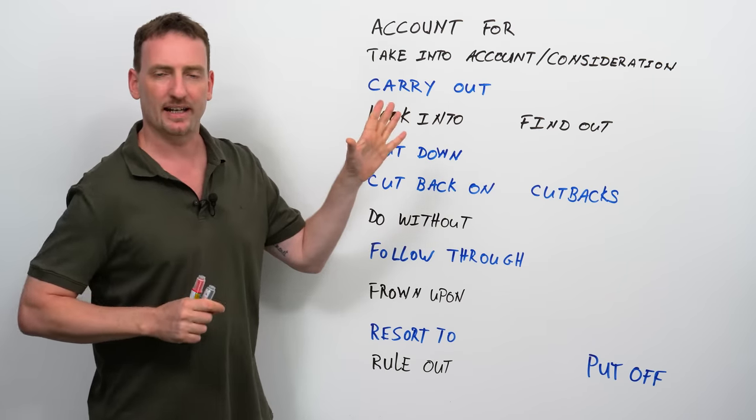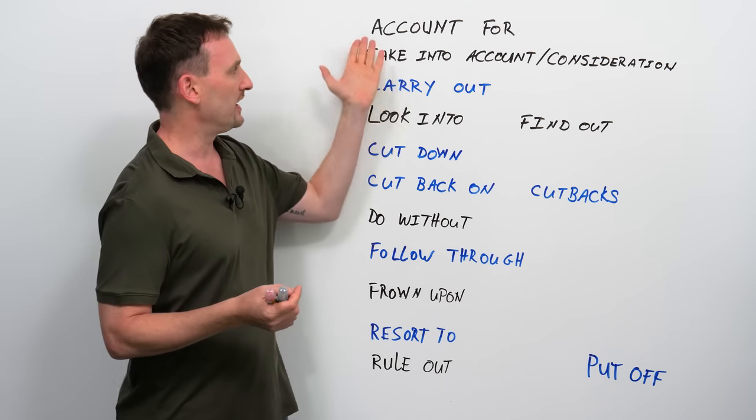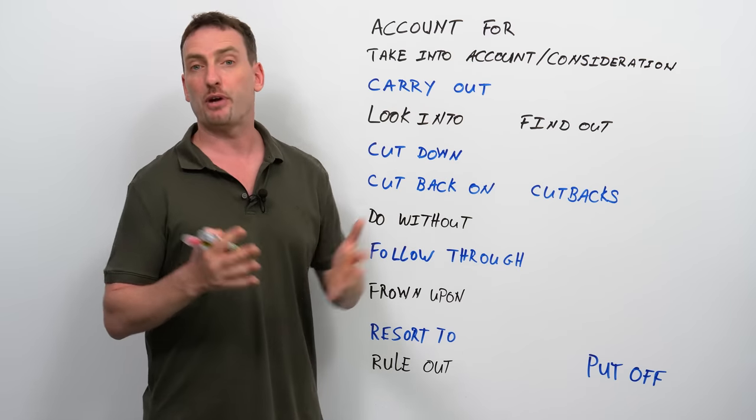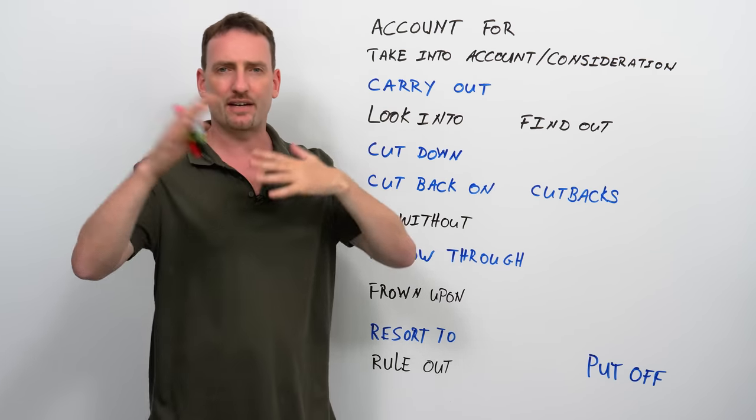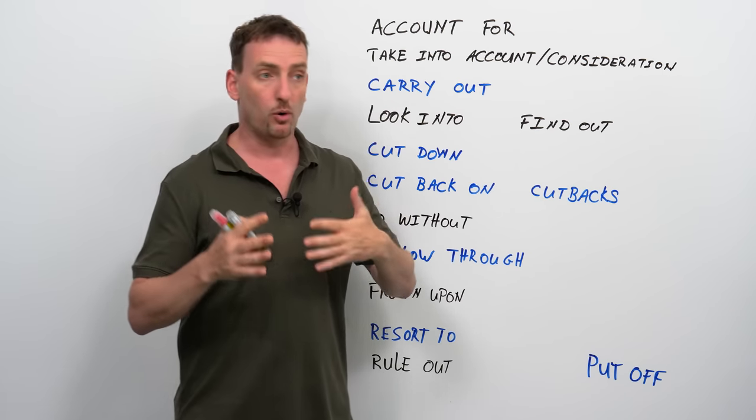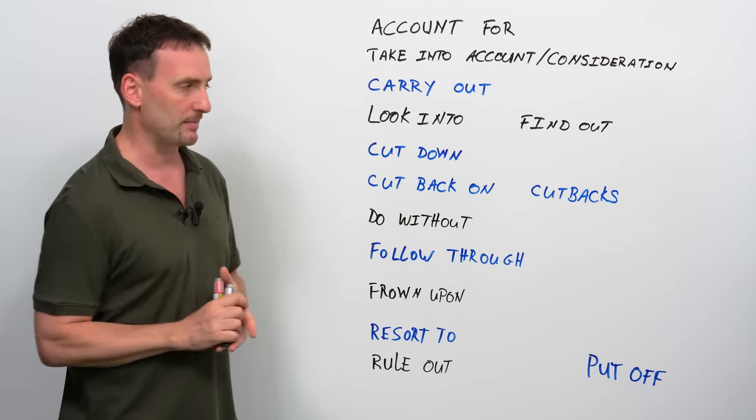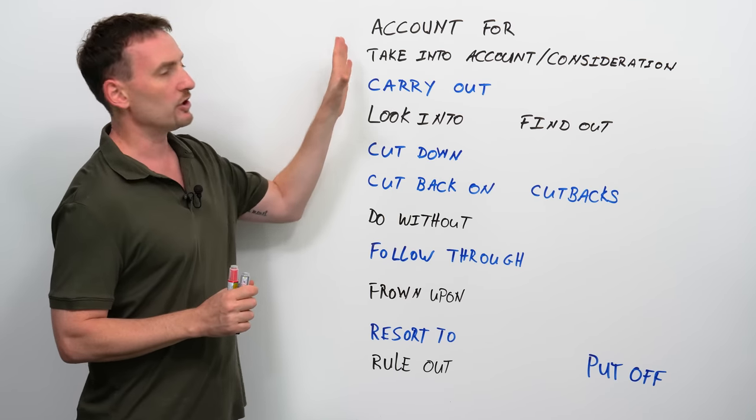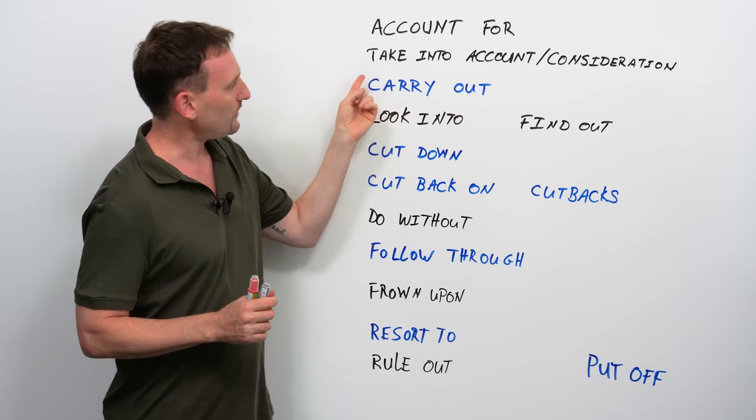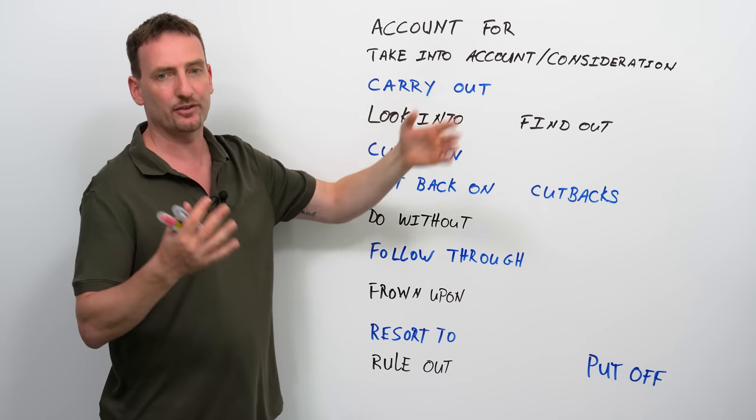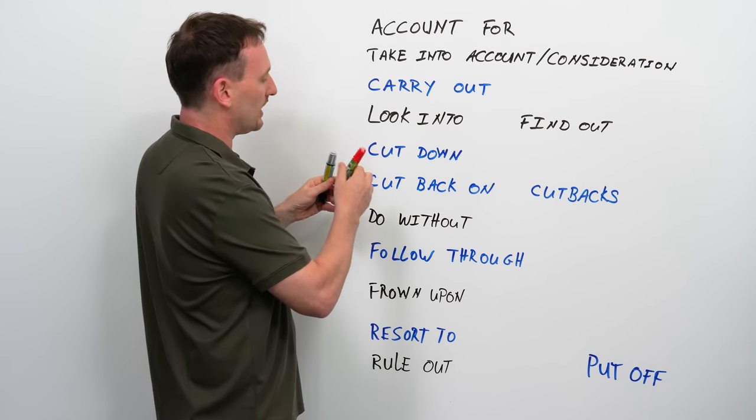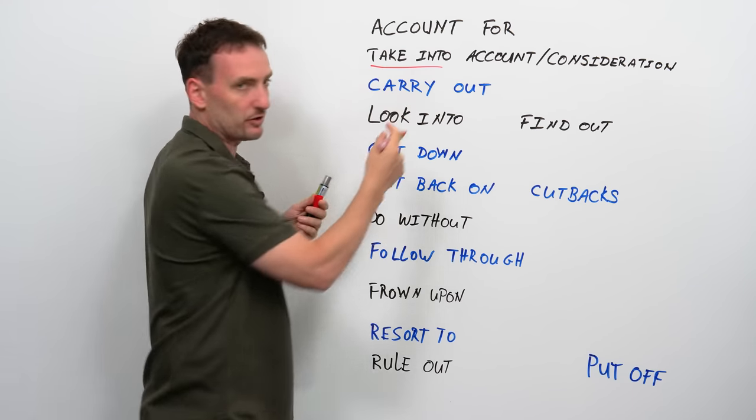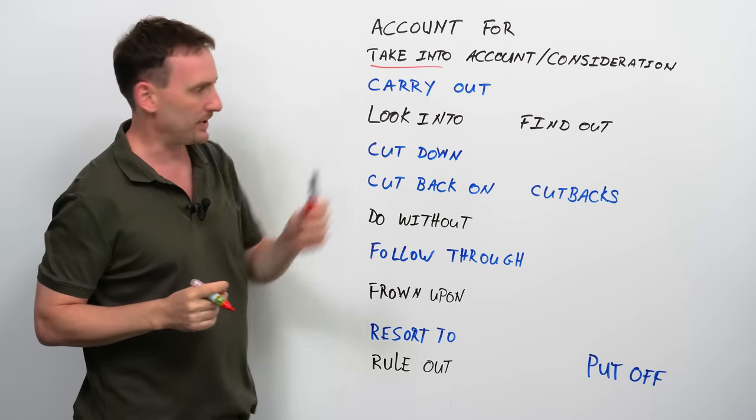So, just before we begin, what is a phrasal verb? You have a verb in conjunction with a preposition, and together the two words have a slightly different meaning or slightly different meanings. Most of them have more than one. So, today we're going to look at account for, take into account or take into consideration, but the actual phrasal is take into, with something else.